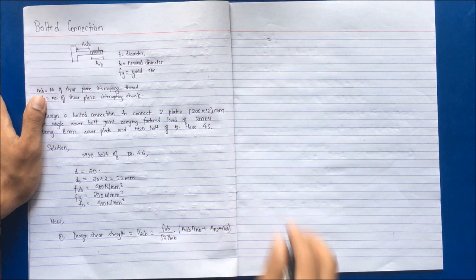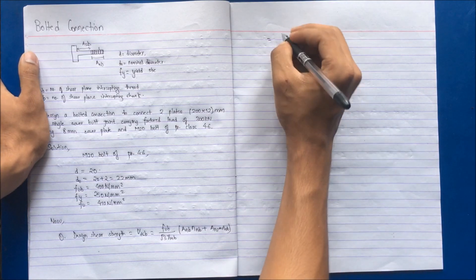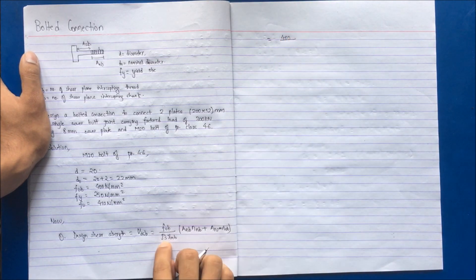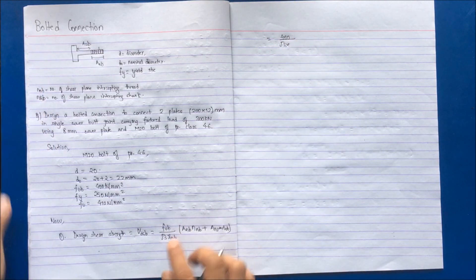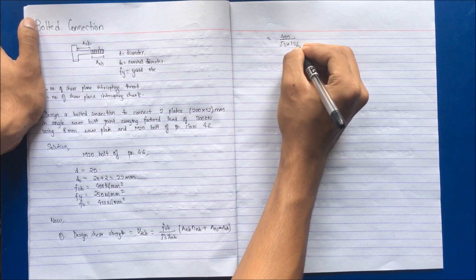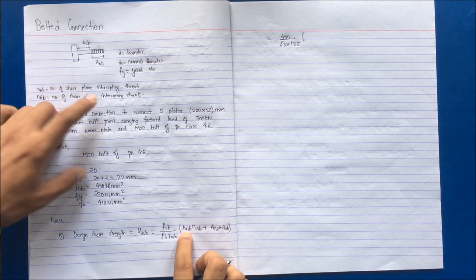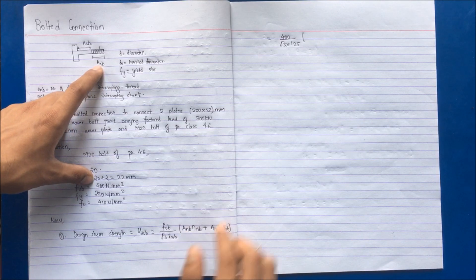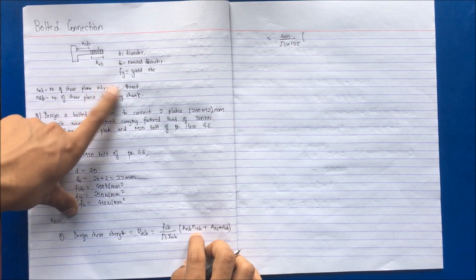We know the value of Fub — the ultimate tensile strength of the bolt — is 400 N/mm². This is divided by √3. The value of γmb is 1.25, taken from the code. ANB is the area of the threaded portion, and NNB is the number of shear planes intercepting the threaded portion.